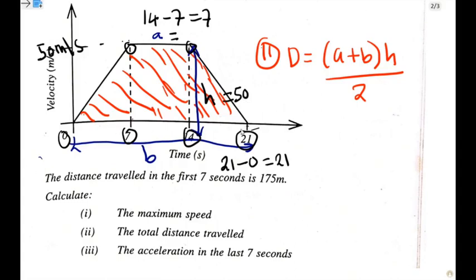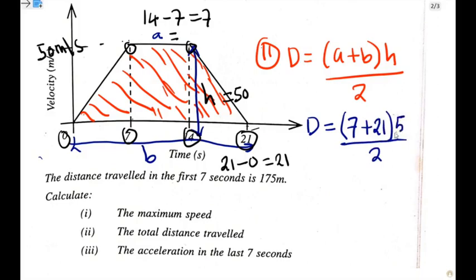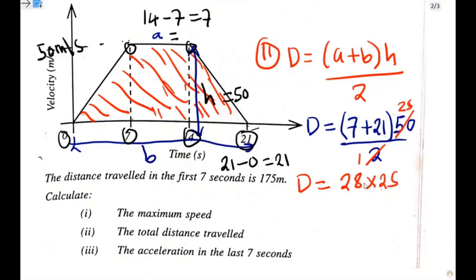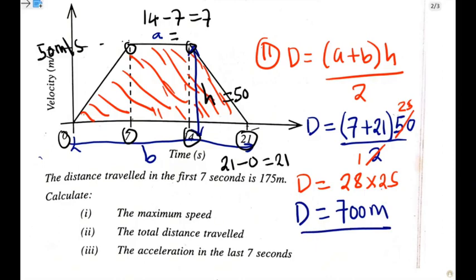From here we can proceed. Distance equals open bracket 7 plus 21 close bracket times 50, divided by 2. Simplifying: 2 into 50 is 25, and 7 plus 21 is 28. So distance equals 28 times 25, which gives us 700. The distance for the whole journey is 700 meters. That is our answer for question 2.